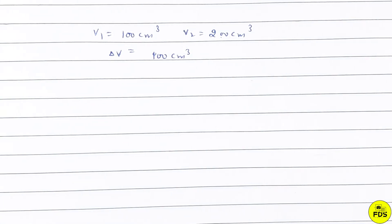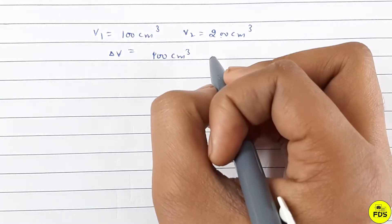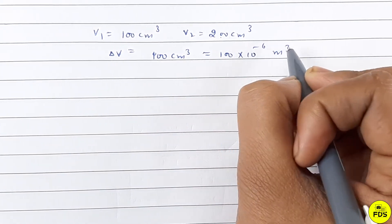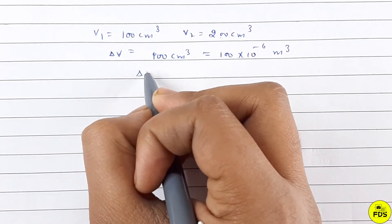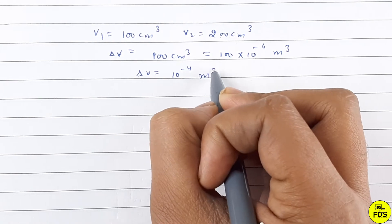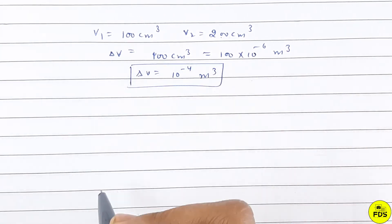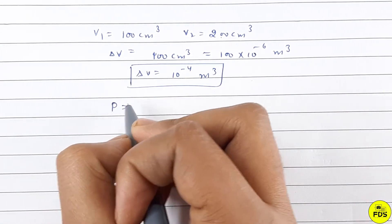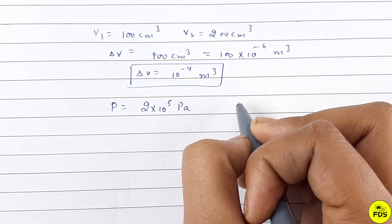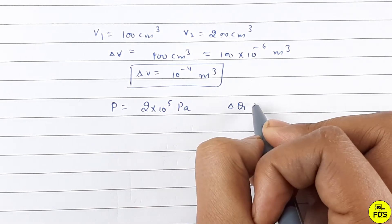So change in volume: 100 centimeter cube is 100 into 10 raised to power minus 6 meter cube, so delta V value is 10 raised to power minus 4 meter cube. Pressure is 2 into 10 raised to power 5 Pascal and change in heat supplied is 50 joule.